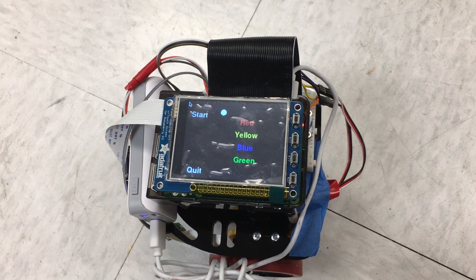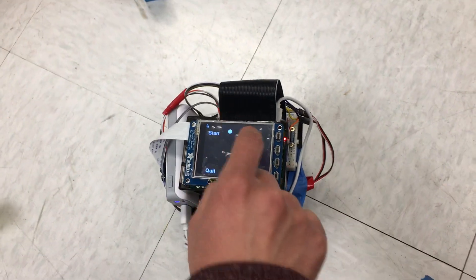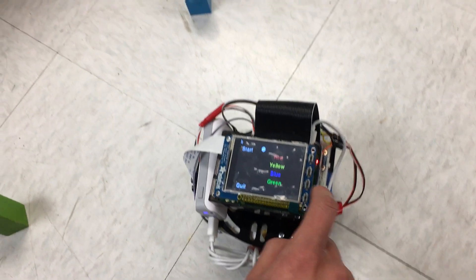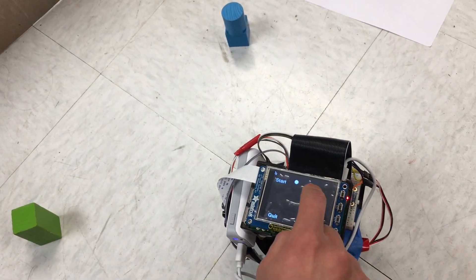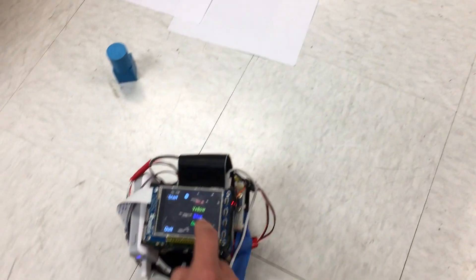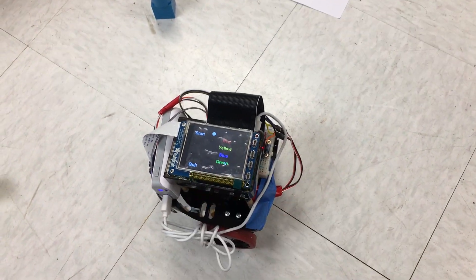So the user can just simply input the color that he wants to find. Let's say if you want to look for red object and then blue object, then green object.